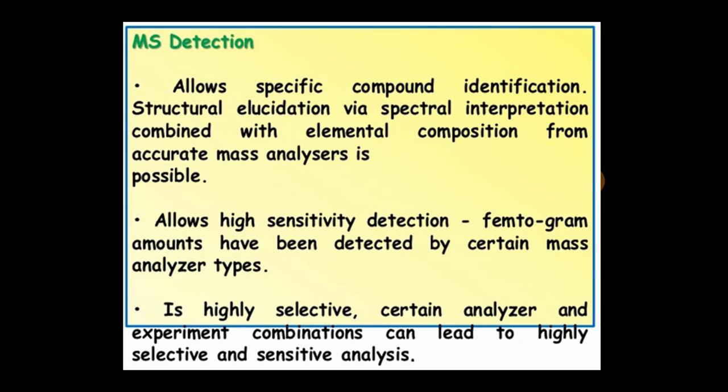MS detection allows specific compound identification. Structural elucidation via spectral interpretation combined with elemental composition from accurate mass analyzers is possible. We have a library of GCMS through which we can elucidate the structure. It allows high sensitivity detection - femto-gram amounts have been detected by certain mass analyzer types. It is highly selective, and certain analyzer and experiment combinations can lead to highly selective and sensitive analysis.